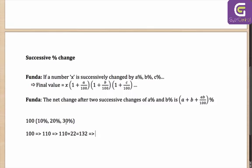Then when you add 30% to it the third and final time, this is not going to be 30% of 110 — it is going to be 30% of 132. 30% of 132 is 39.6, which will lead you to the final value: if it was 40 it would have been 172, so it is 171.6.